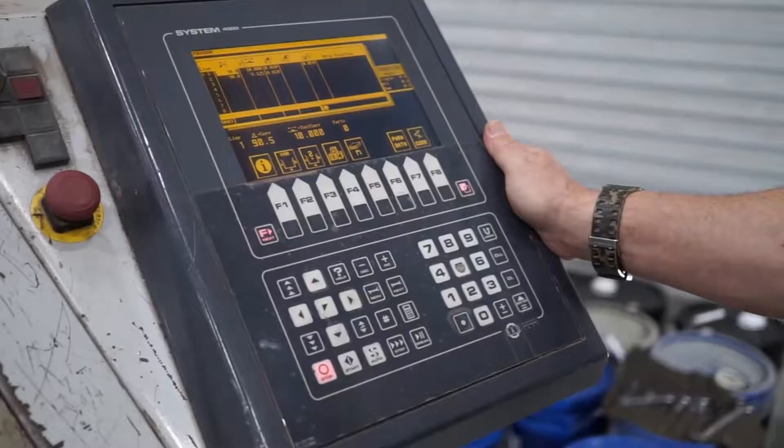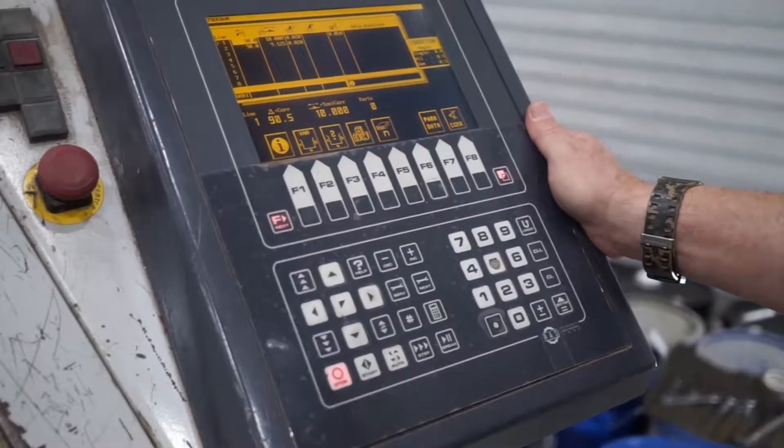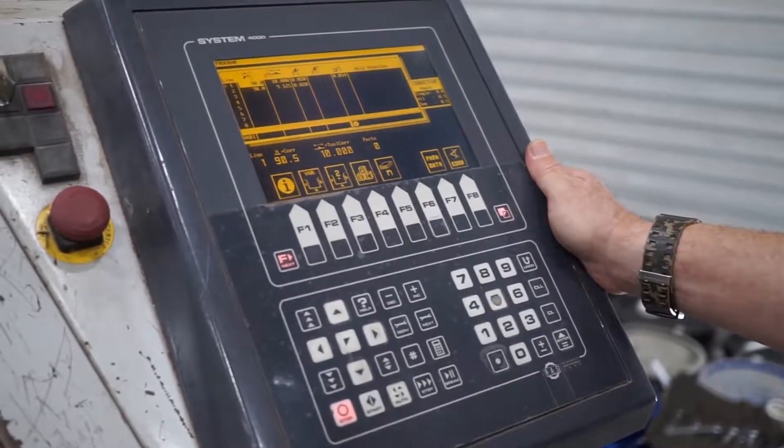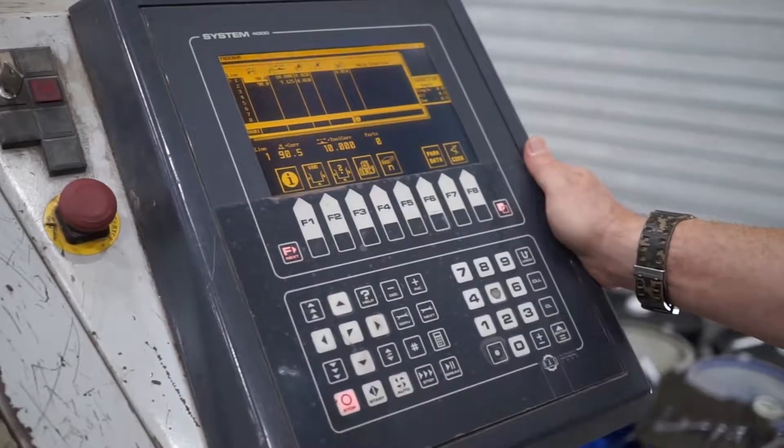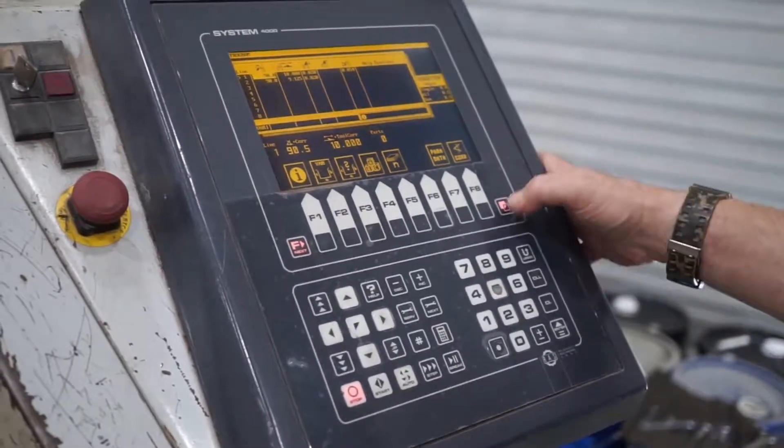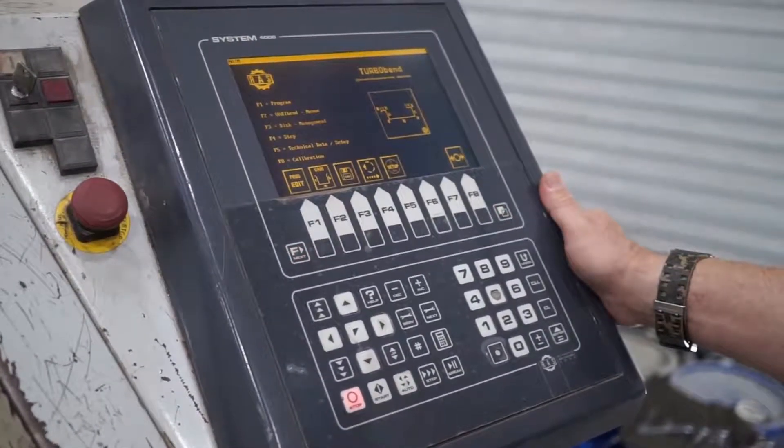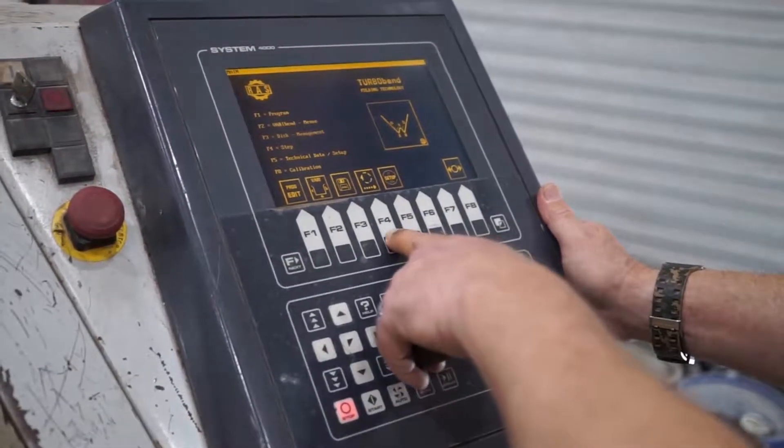If you find that in a program your parts are off in dimension, could be an eighth, could be a quarter, something of that nature, we have to correct the backstop dimension. To do that I'm going to exit the program screen by pressing the main menu key and I'm going to enter the step operation or F4.